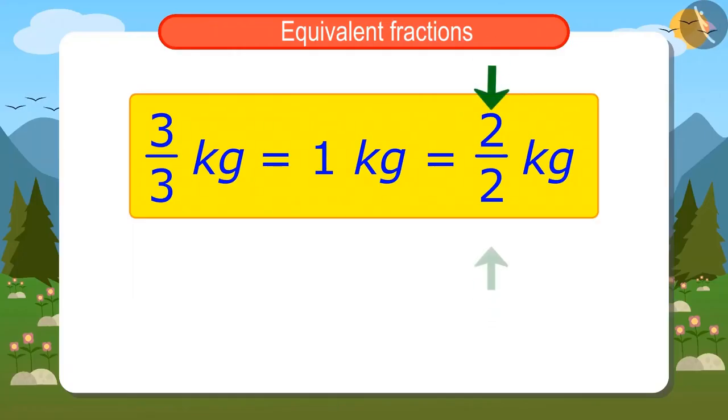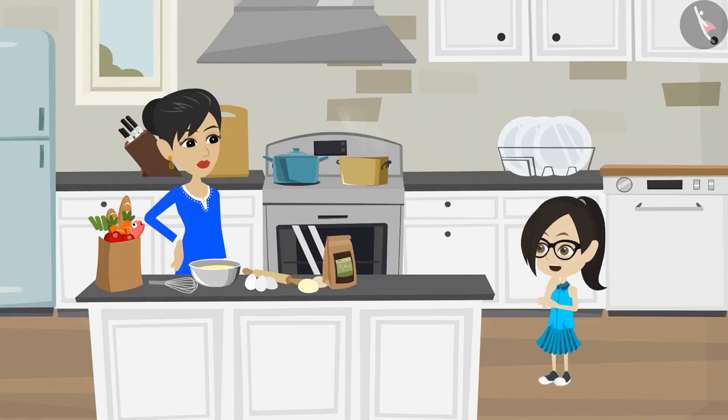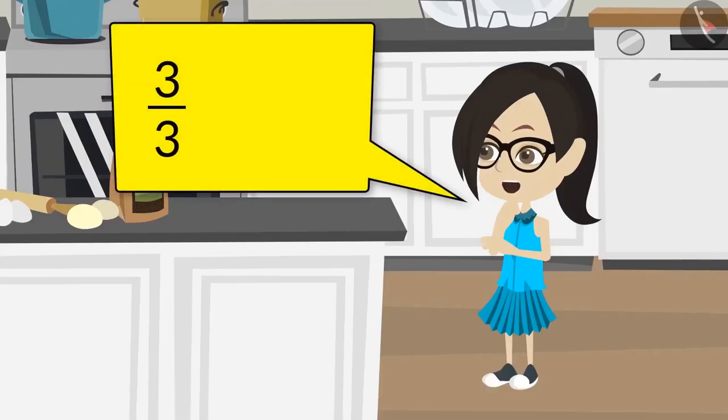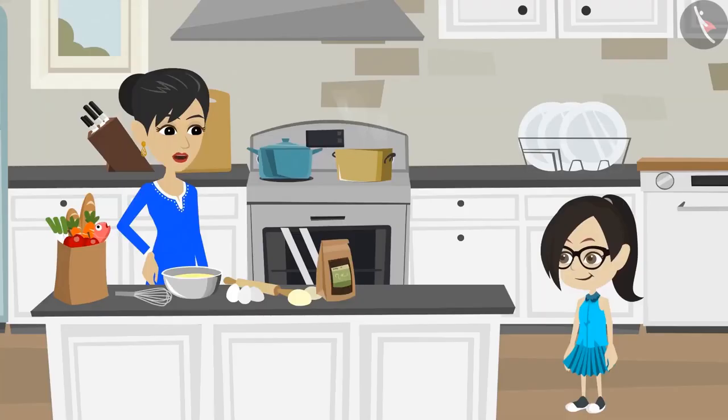Yes, Vandana, when there is the same number in the numerator and denominator, then it means we are talking about the whole quantity. Oh, this means that 3 upon 3 and 2 upon 2 are equivalent fractions. Yes, Vandana, 3 upon 3 and 2 upon 2 are equivalent fractions.